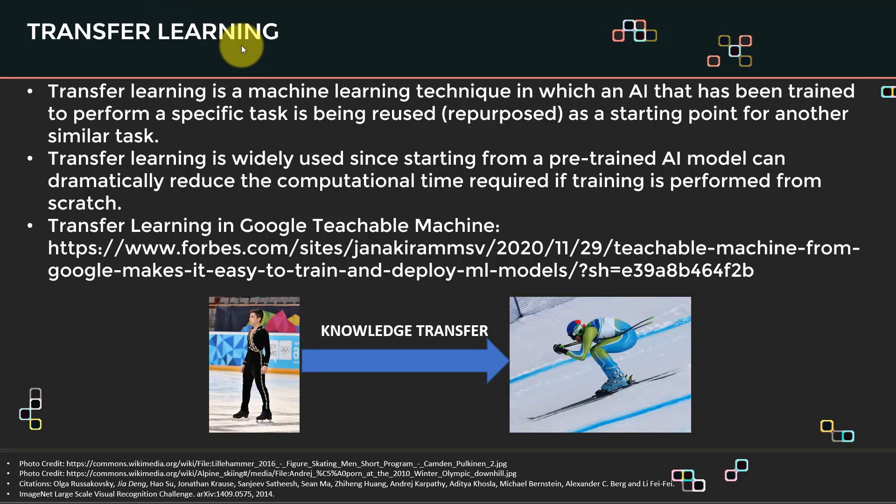So what is transfer learning? Transfer learning is a machine learning technique in which an AI that has been trained to do a given task is being repurposed as a starting point for another similar task. So if you guys think about it, we as humans, let's say if we master, for example, skating, you will find that people who generally are good at skating, they can easily learn how to ski. Why? The idea here is that they can reuse some of the skill set, some of that intelligence, you can repurpose it to a different kind of similar task, which requires pretty much the same movements. And that's what we call it, knowledge transfer.